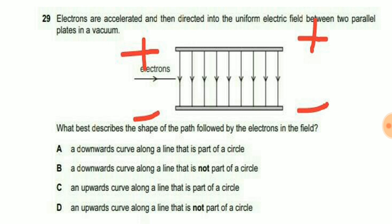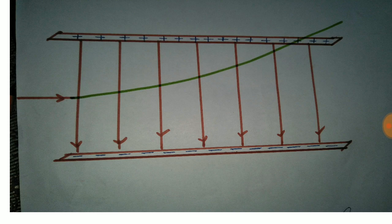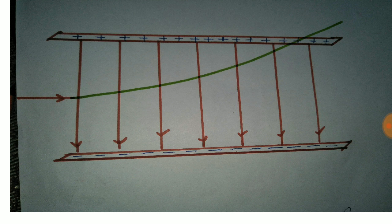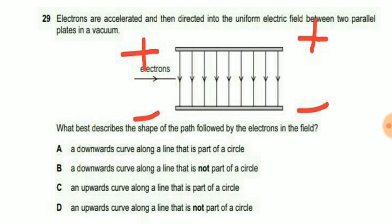As we know that beams of electrons are negatively charged particles, so they should get attracted towards the positive plate. So the motion of electrons should be in an upward direction. And we know that the path followed by the electron is parabolic, it is not a circular path because motion of electrons in an electric field is parabolic.